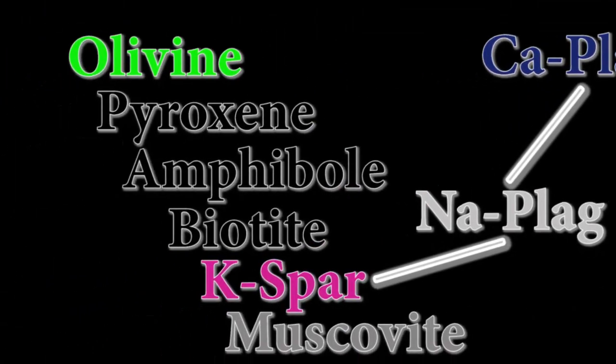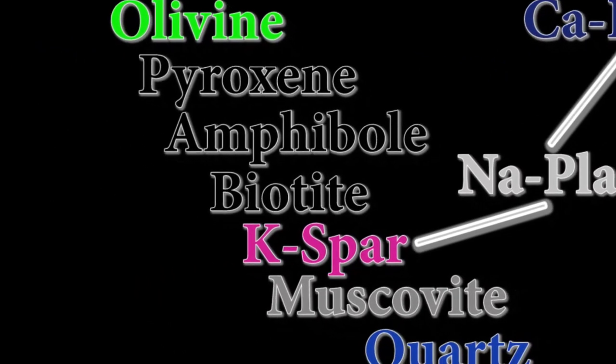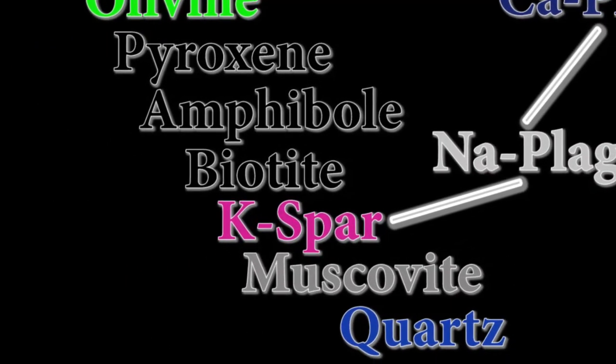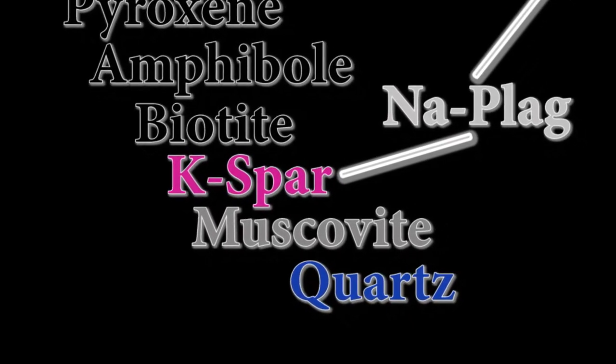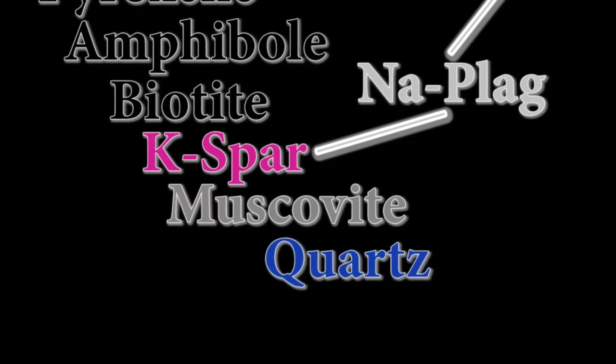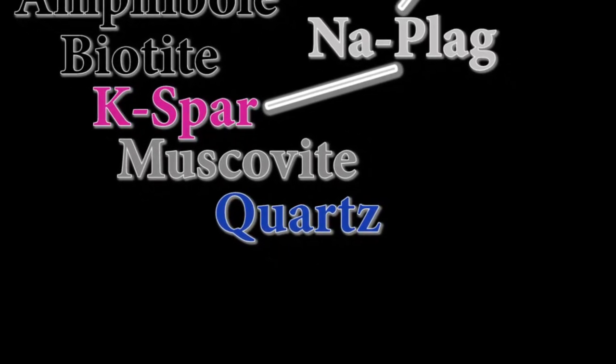On the left side we see the discontinuous series which shows that after olivine crystallizes from a melt, we expect pyroxene to form, then amphibole, biotite mica, orthoclase feldspar, muscovite mica, and finally quartz.